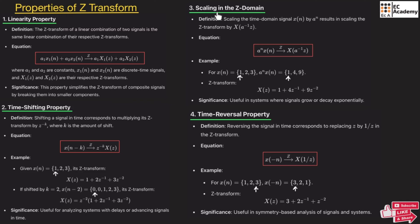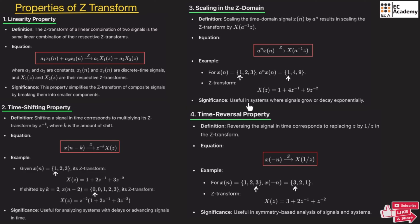The next property is scaling in the Z-domain. If we have an input signal multiplied by aⁿ and perform the Z-transform, we get X(a⁻¹z). Scaling the time-domain signal by aⁿ scales X(z) by a⁻¹. For example, if the signal {1, 2, 3} is multiplied by some constant aⁿ resulting in {1, 4, 9}, the Z-transform is 1 + 4z⁻¹ + 9z⁻². Scaling in the time domain is helpful in systems where signals grow or decay exponentially.